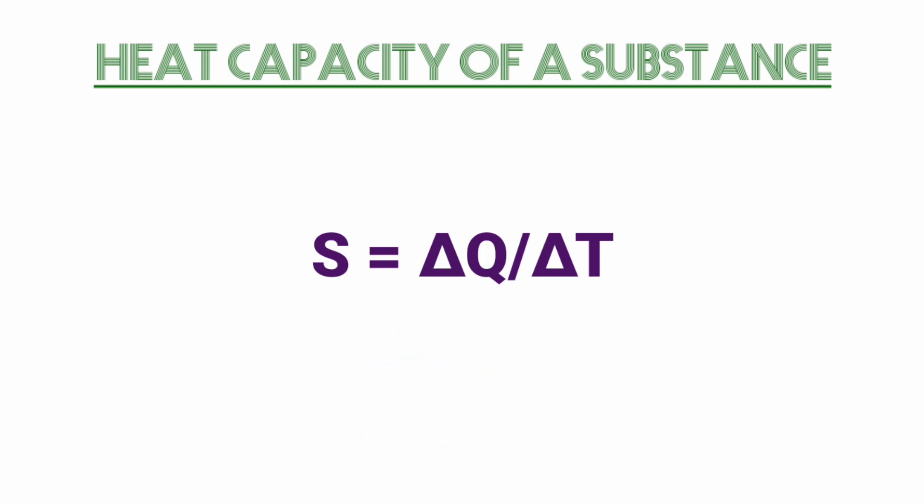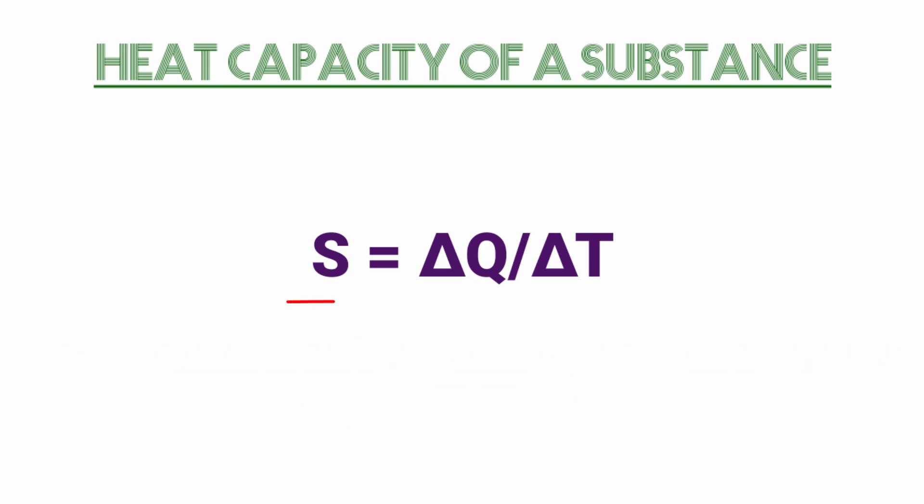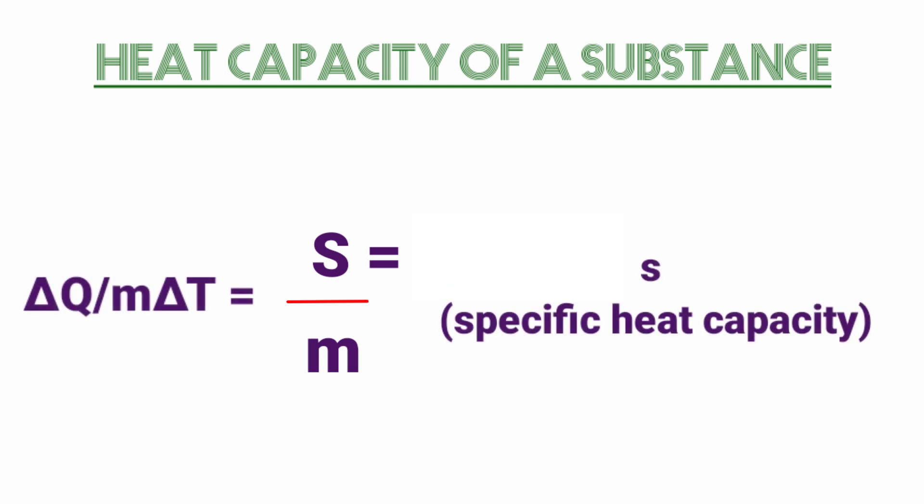To define a constant characteristic of the substance independent of its amount, we divide S by the mass of the substance m in kilograms. That is, s = S/m. Here, s is known as the specific heat capacity of the substance. It depends on the nature of the substance and its temperature. The unit of specific heat capacity is joule per kilogram per Kelvin.